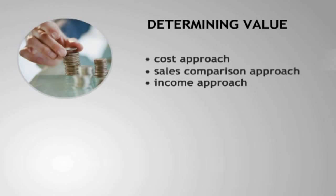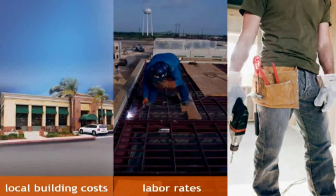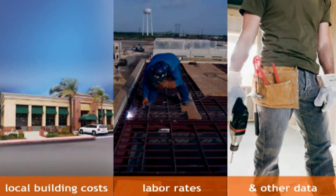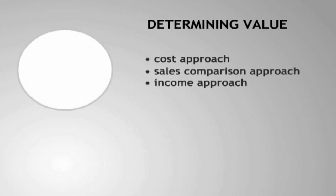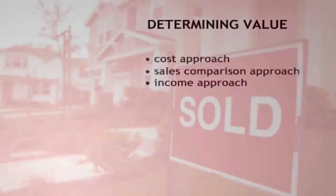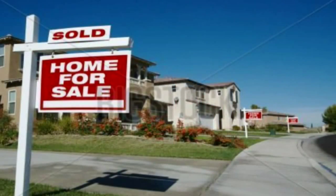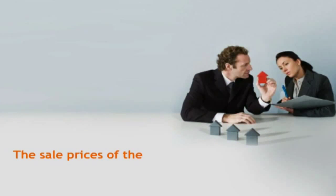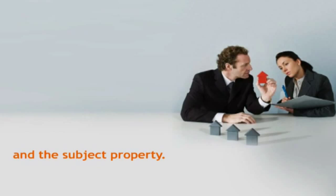In the cost approach, the appraiser uses information on local building costs, labor rates, and other data to estimate the cost to reconstruct the property. In the sales comparison approach, the appraiser researches recent sales and locates properties which are considered the most comparable to the subject. The sale price of those comparables are then used as a basis in which adjustments are made to account for differences between the comparables and the subject property.